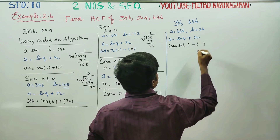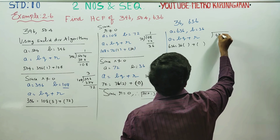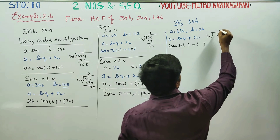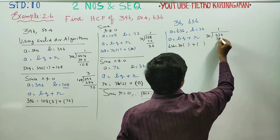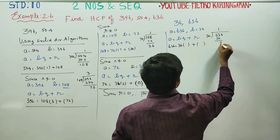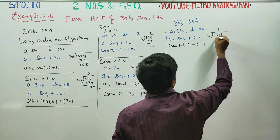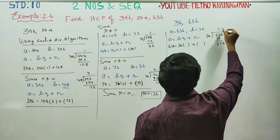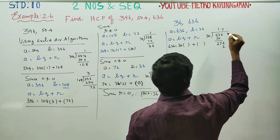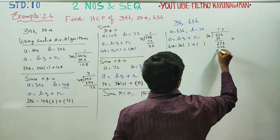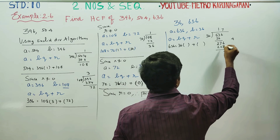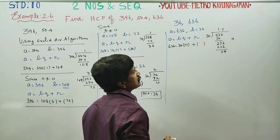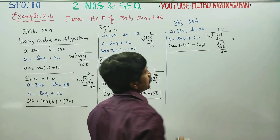636 divided by 36: 17 times 36. The quotient is 17 and the remainder is 24. HCF — remainder is not 0, so we continue.